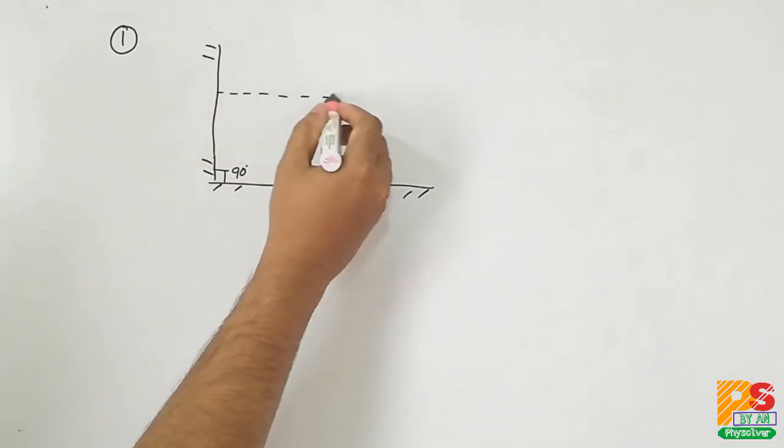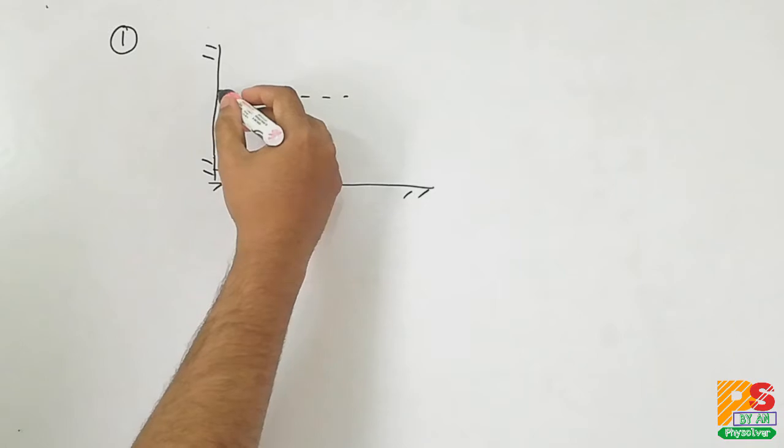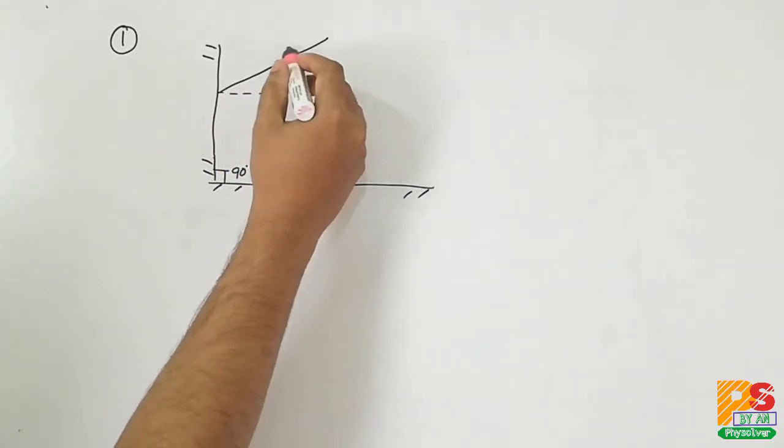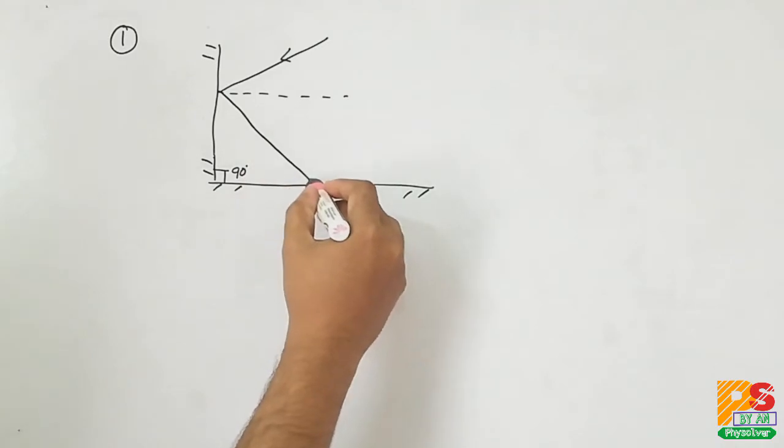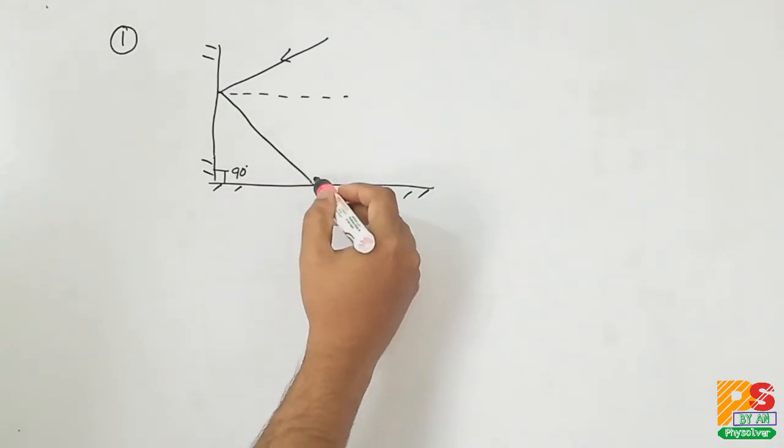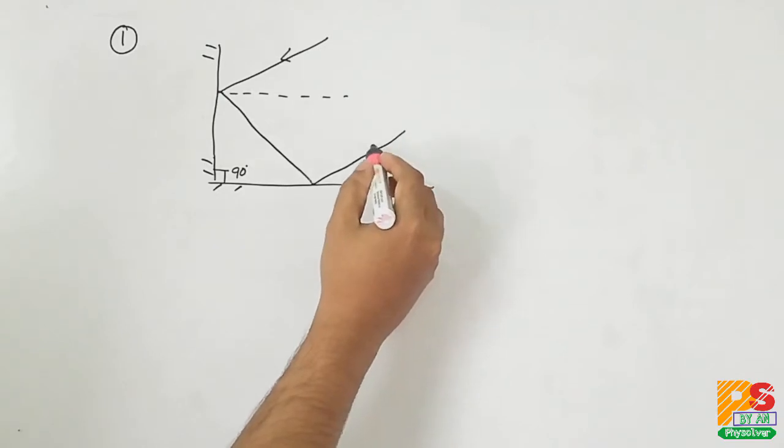First draw the normal. This is the incident ray, this is the first reflected ray, and this is the emergent ray.